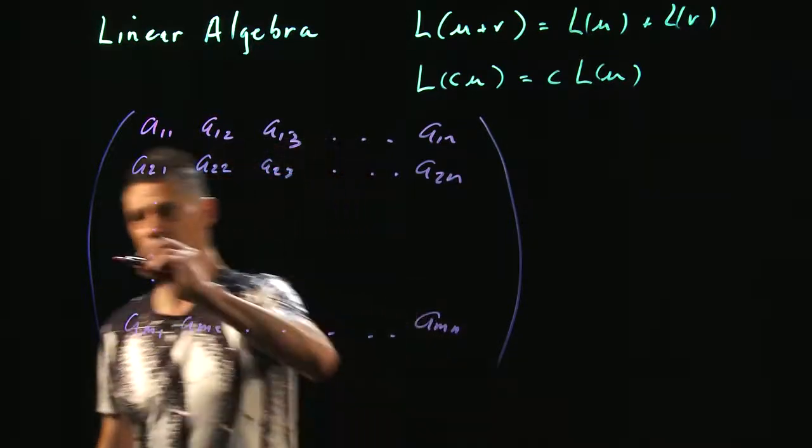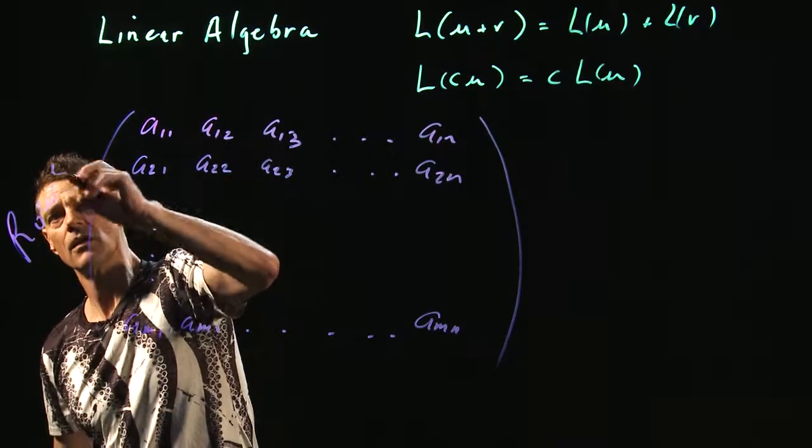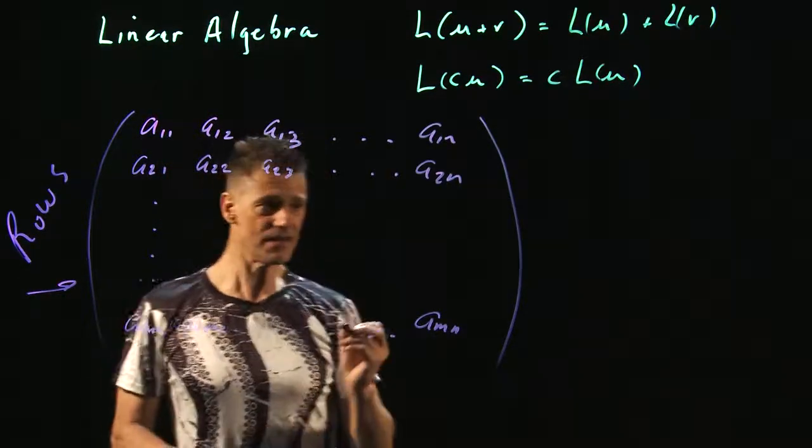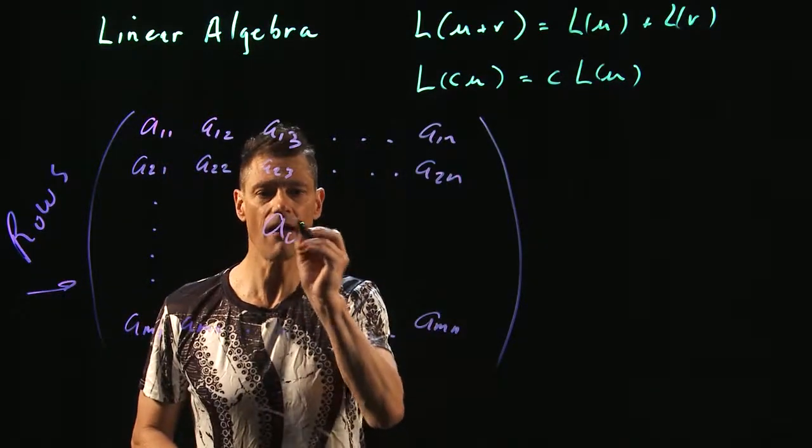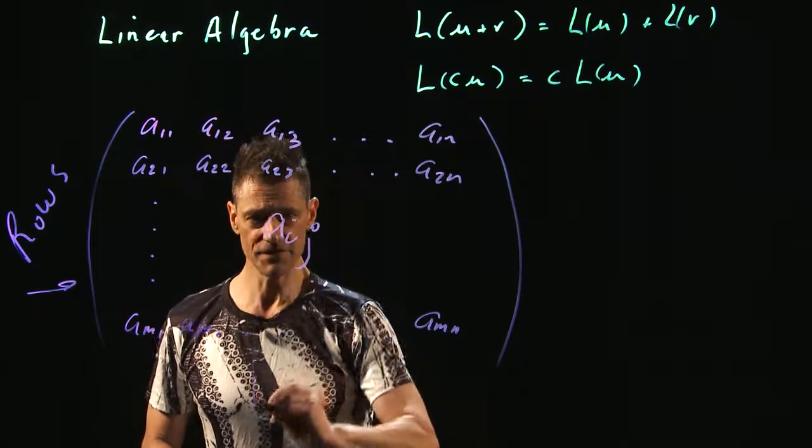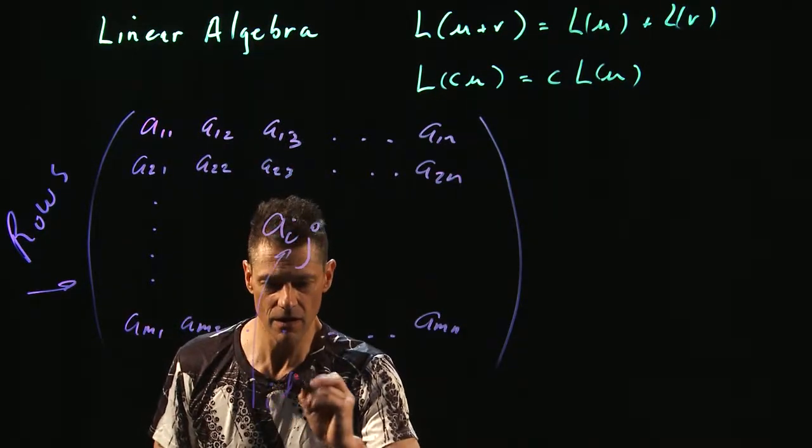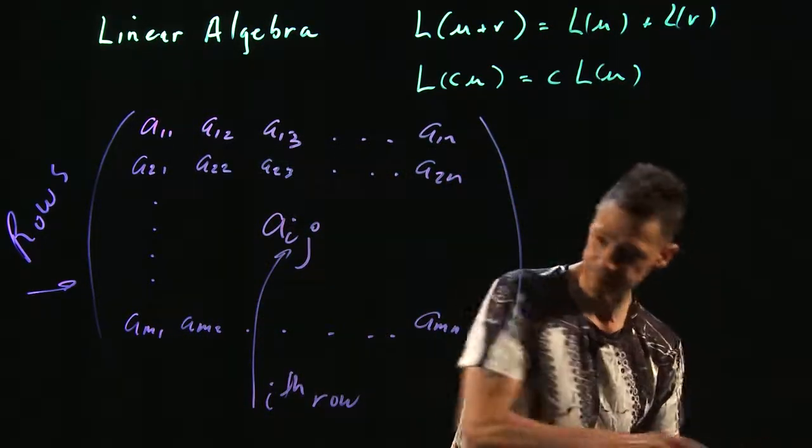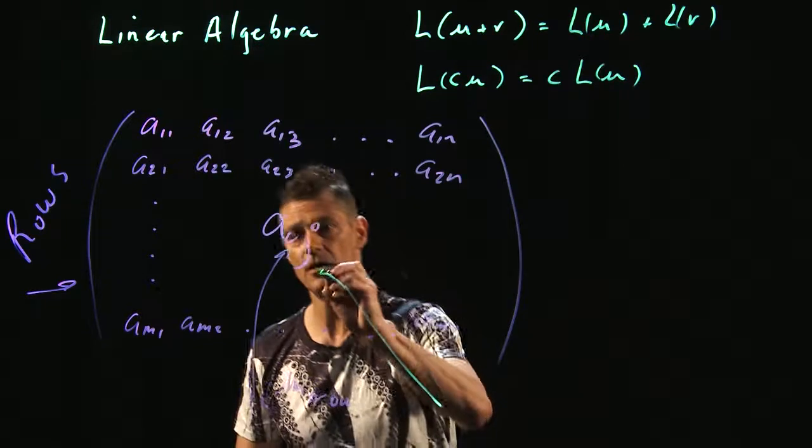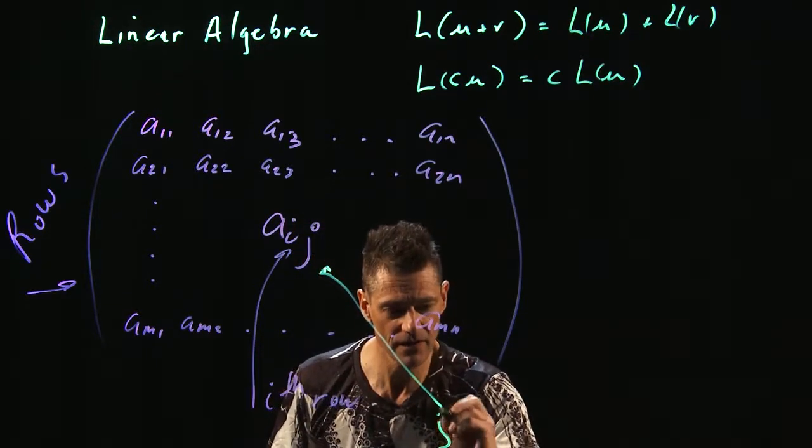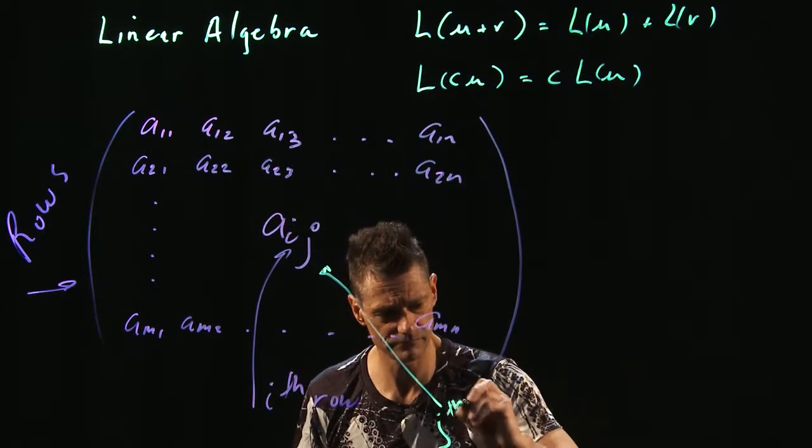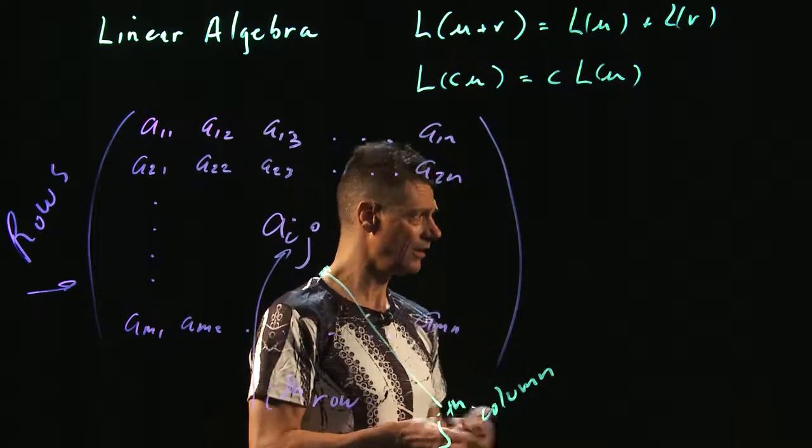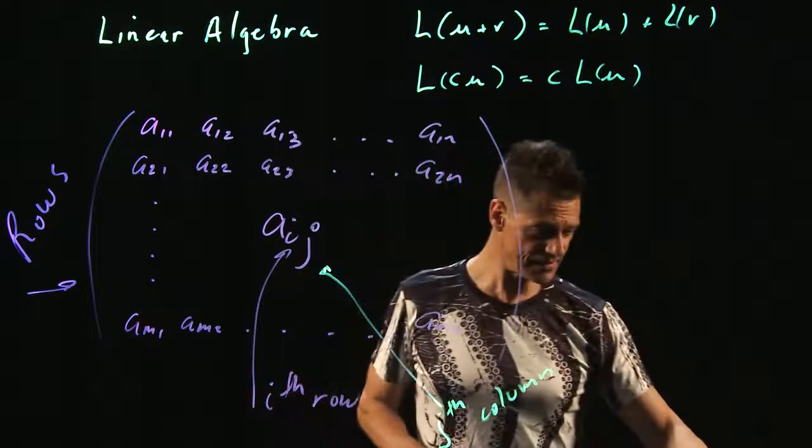And these are the rows going this way. And these are the columns coming down this way. So, this notation, AIJ, this is the i-th row. And this is the j-th column.